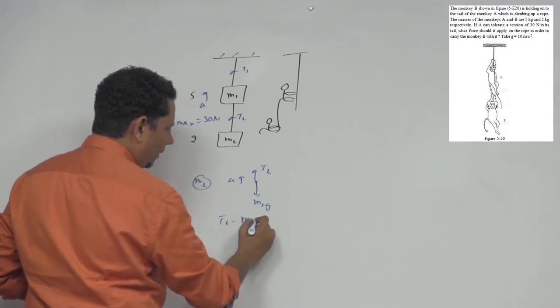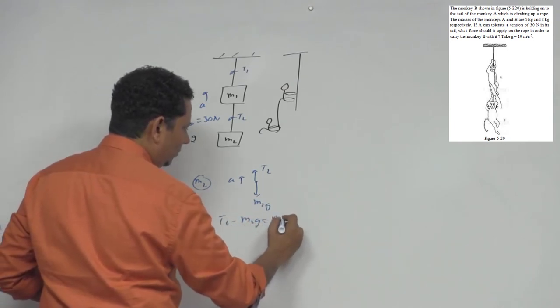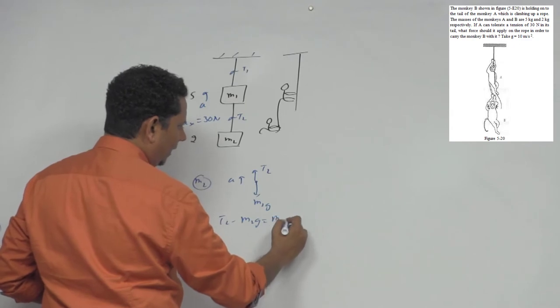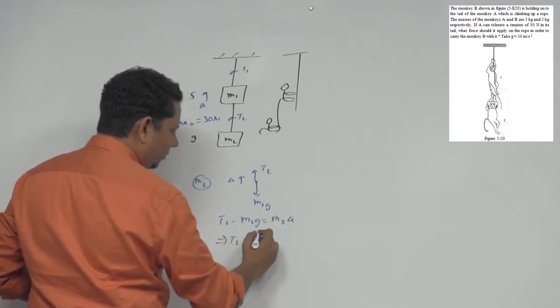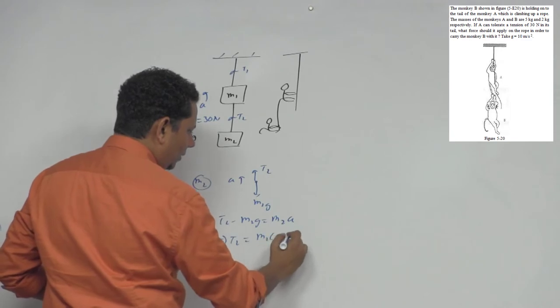So now, is case mein agar aap equation likhenge, so equation hojaegi t2 minus m2g will be equal to yeh aapka aagya m2a, which implies t2 will be equal to m2g plus a.